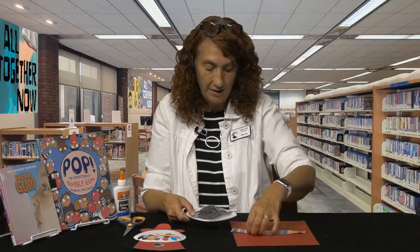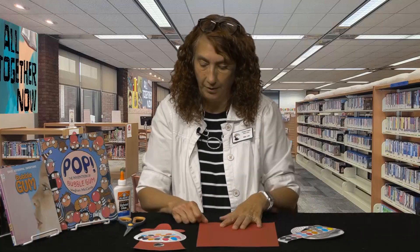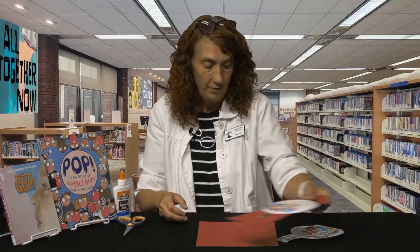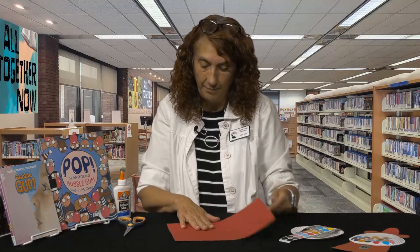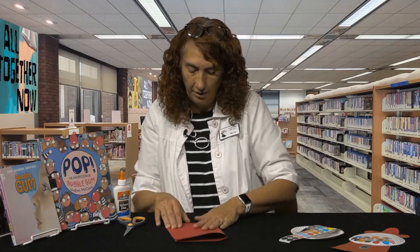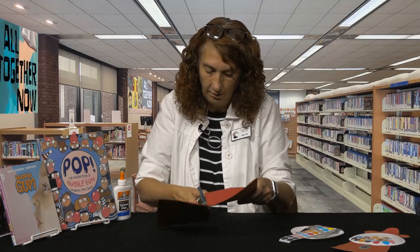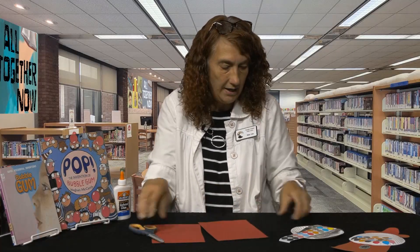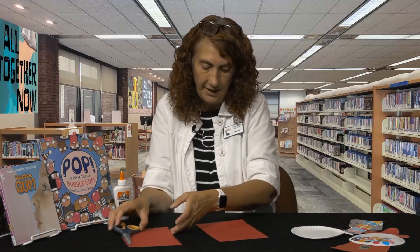In your packet when you come to the library, you are going to find a small paper plate, some foil, some round little stickers, and a sheet of red construction paper. To get started with this bubble gum machine, you're going to want to take your paper and just fold it in half. We're going to fold it in half and go ahead and cut it.